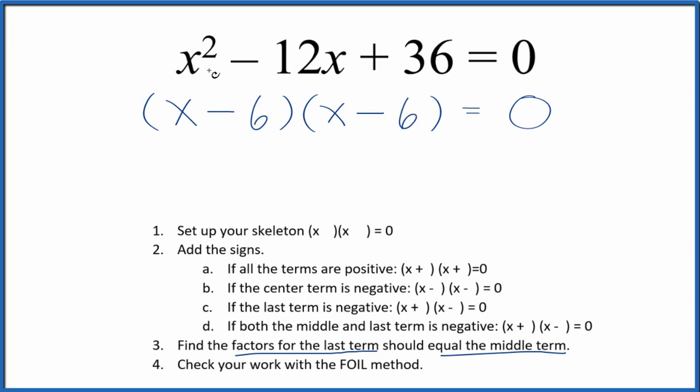We've factored the equation x squared minus 12x plus 36. We should check our work with the FOIL method, though. Multiply the first, outside, inside, and then last.